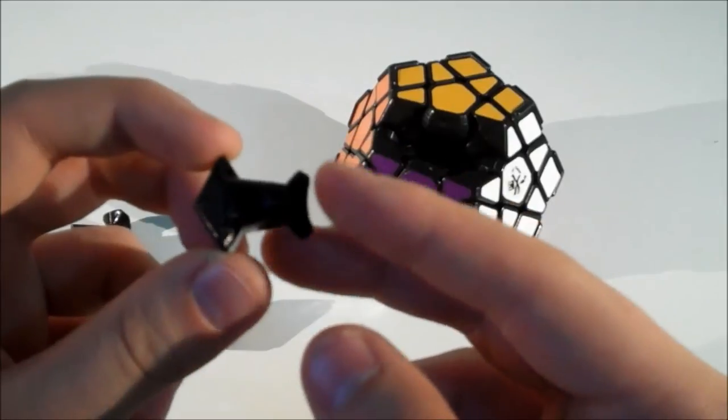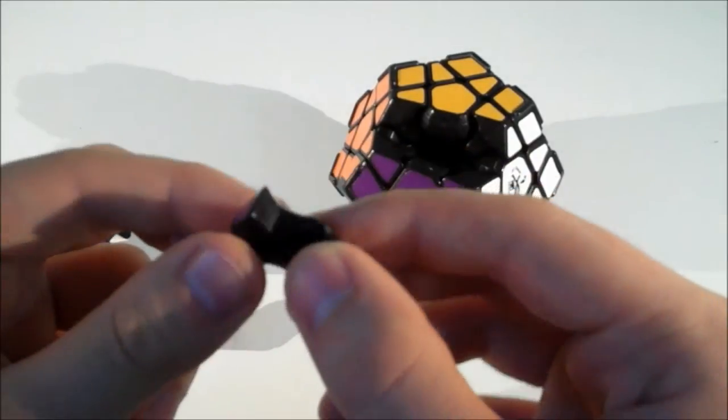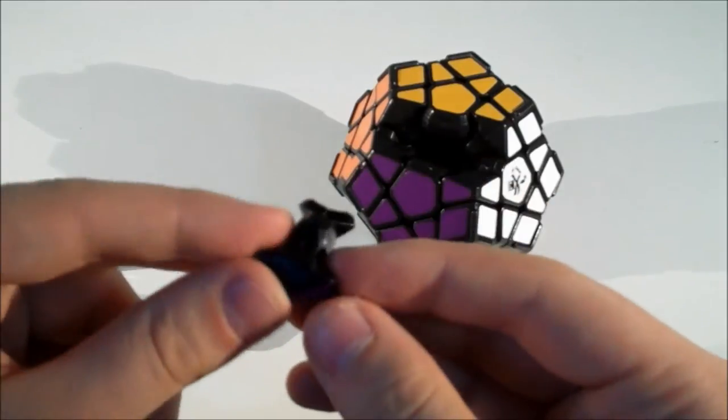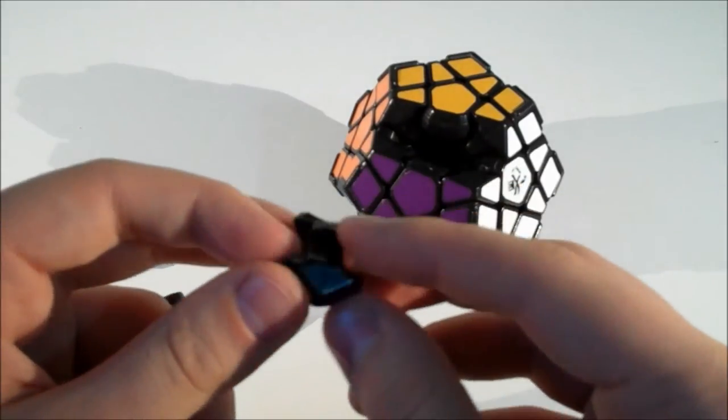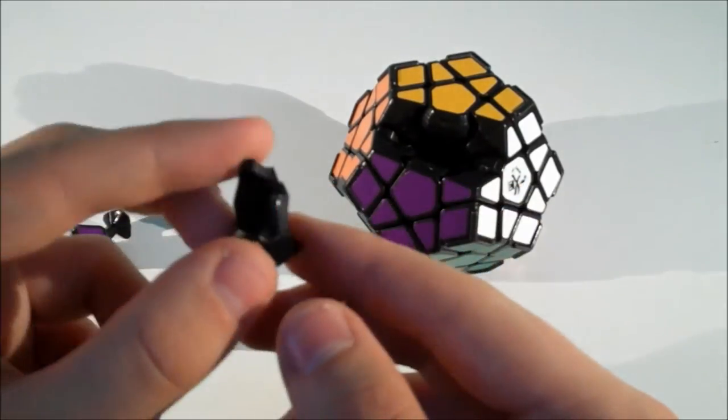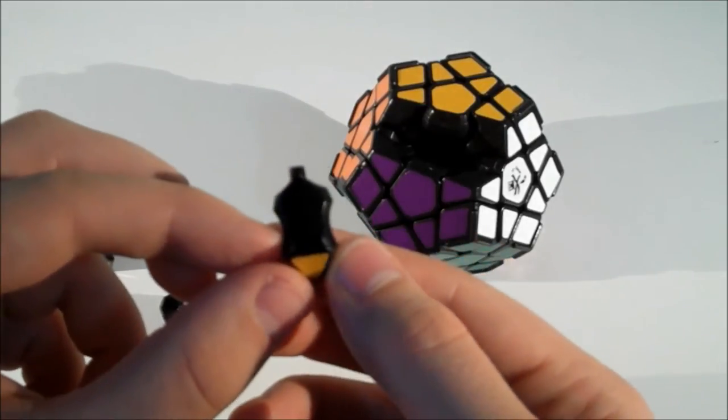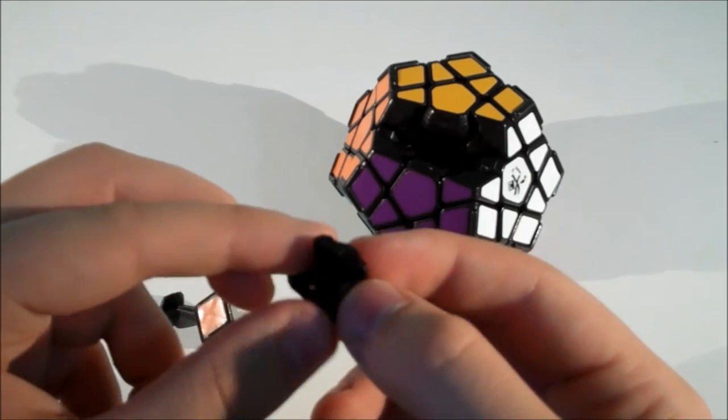Now I was kind of expecting torpedoes on this, but obviously there aren't any. Perhaps they're not needed, or they just couldn't get them in because maybe it locked up too much or something like that. But to be honest, I don't think it does need them. I've never had a pop on it and the cube does feel very smooth as it is.